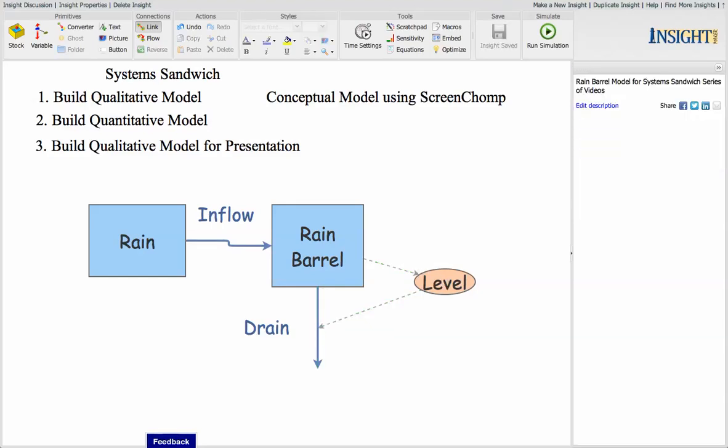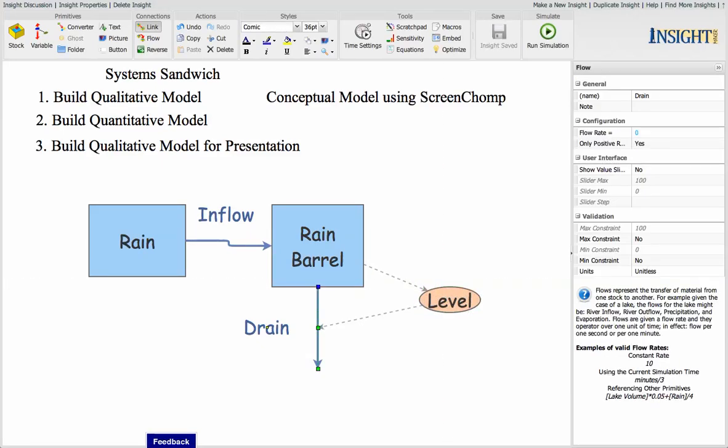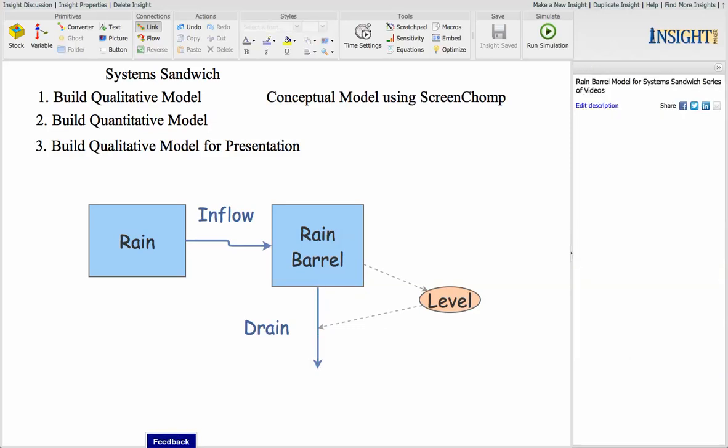So we've got the information for the level over here on the right, and we've got the water flow coming out of the bottom of the barrel. So we have the level information affecting the drain, going to the drain that affects the flow going out. So this is our basic quantitative model. But we've got to do some more things here first.